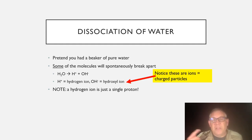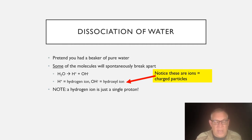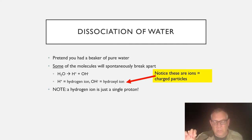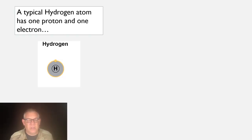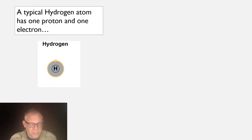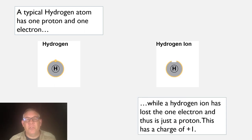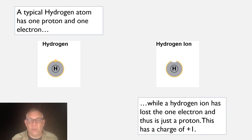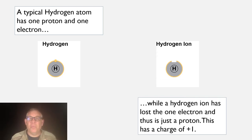Going back to that term — an ion is a charged particle. A hydrogen ion has a positive charge and a hydroxyl ion has a negative charge. Anything with a charge is called an ion. Here's a typical hydrogen atom: one proton, one electron, neutral — no charge — the simplest atom. Here's a hydrogen ion: one proton, no electron. Protons have a charge of +1, and there's no electron to cancel that charge, so the hydrogen ion has a charge of plus one.